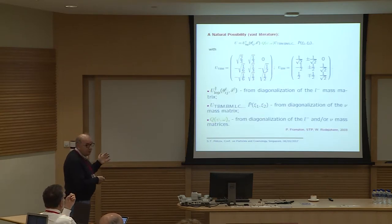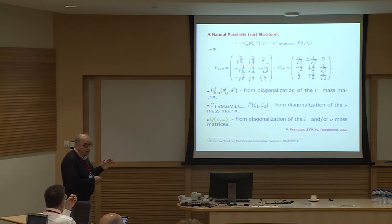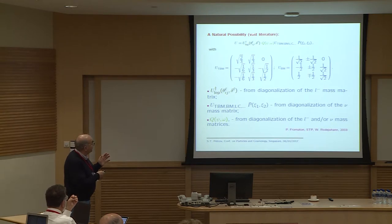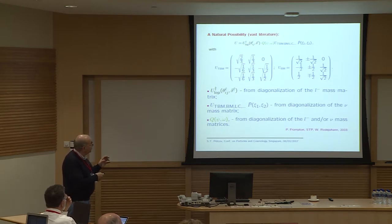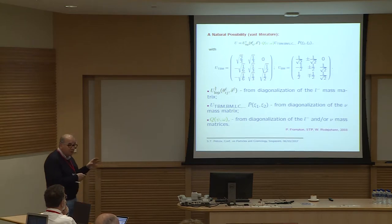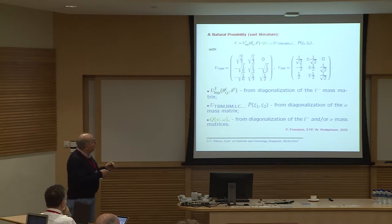This approach seems extremely natural, also in view of the fact that the PMNS matrix is a product of two matrices: one from the diagonalization of the neutrino mass matrix and one from the diagonalization of the charged lepton mass matrix. It is often assumed that the part from the neutrino sector has an underlying symmetry form, while corrections needed to bring the symmetry values into agreement with observations are provided by the charged lepton sector.